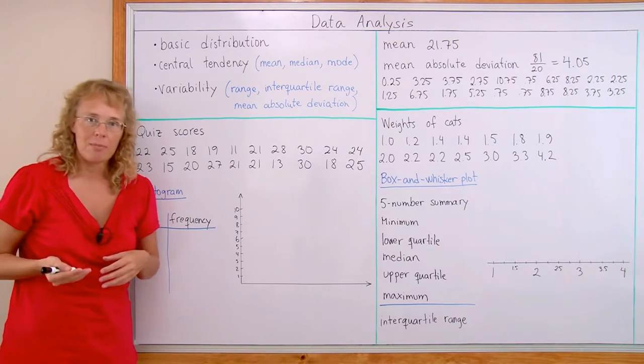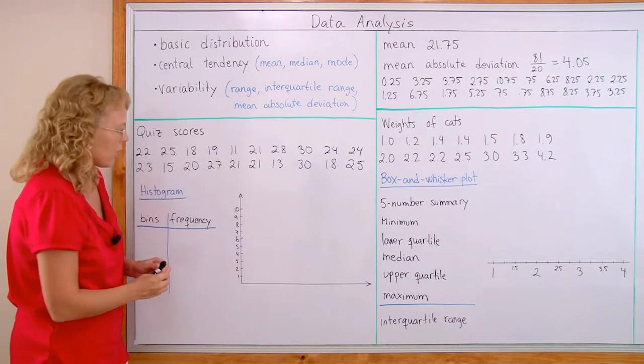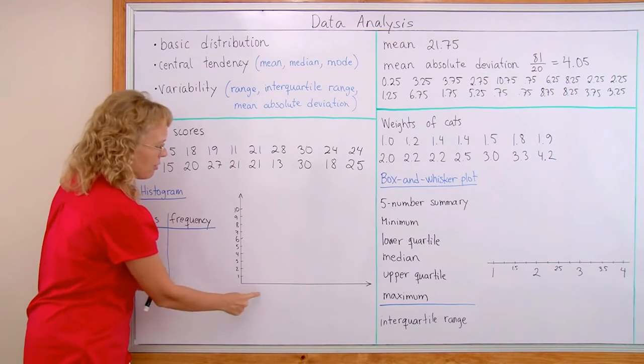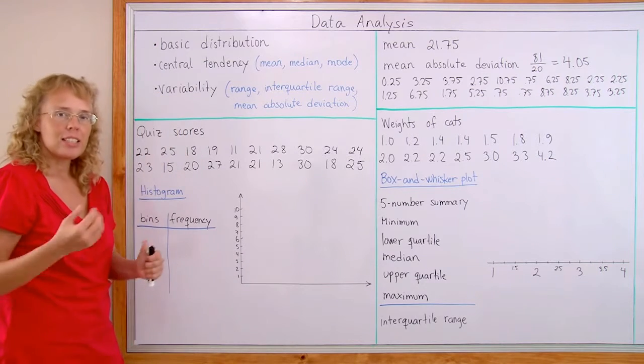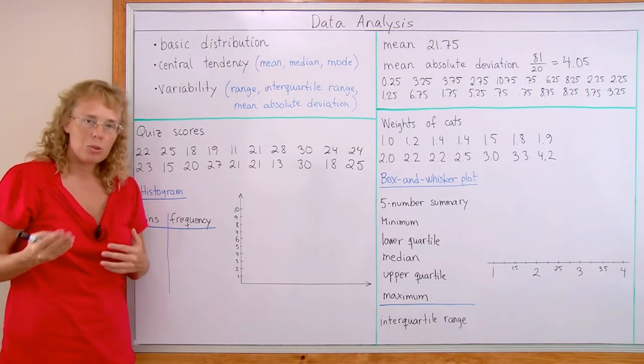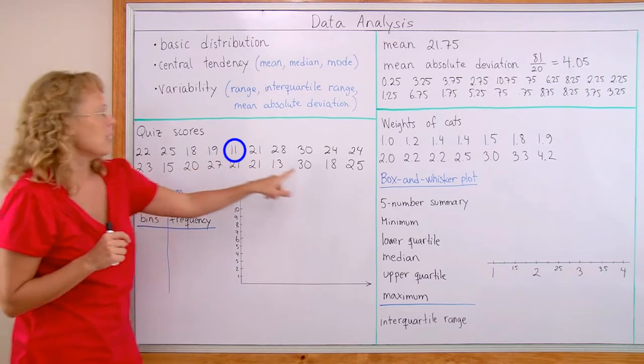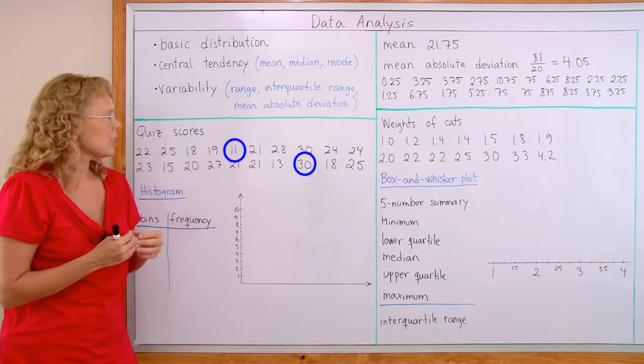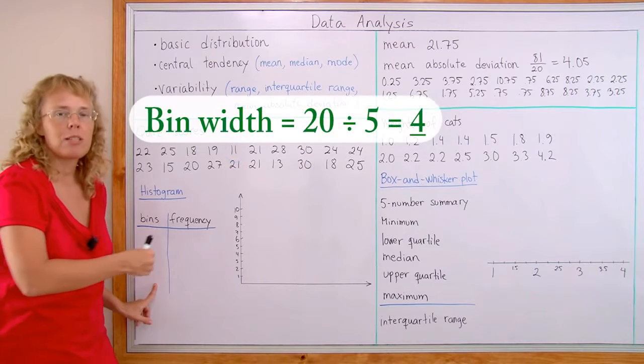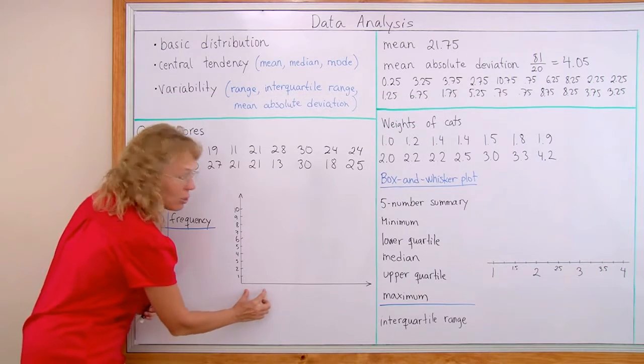Now, to make a histogram, remember, histogram is like a bar graph, but the bars are drawn together because there is not a single bar for each number. For example, I would not draw here a bar for 11 and then for 12 and 13, 14, 15, etc. Instead, I group the data into bins. And to do this, you first check the minimum and maximum of this data, 11 and 30. The difference between those is about 20. And let's say I want to make 5 bins here, so I take 20 divided by 5 equals 4. That would give me the bin width.